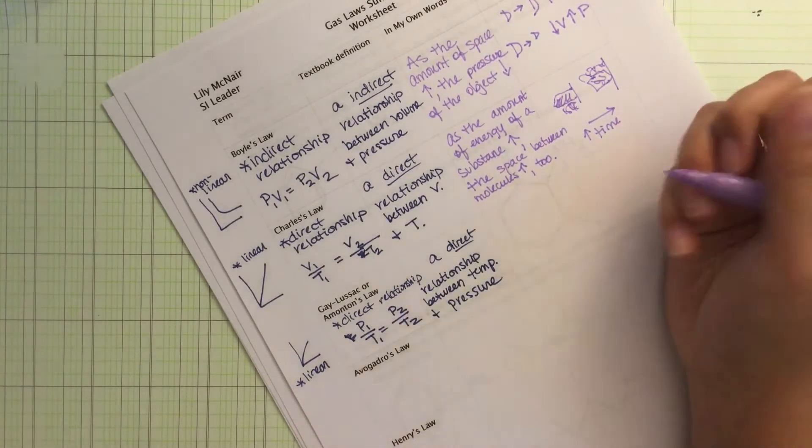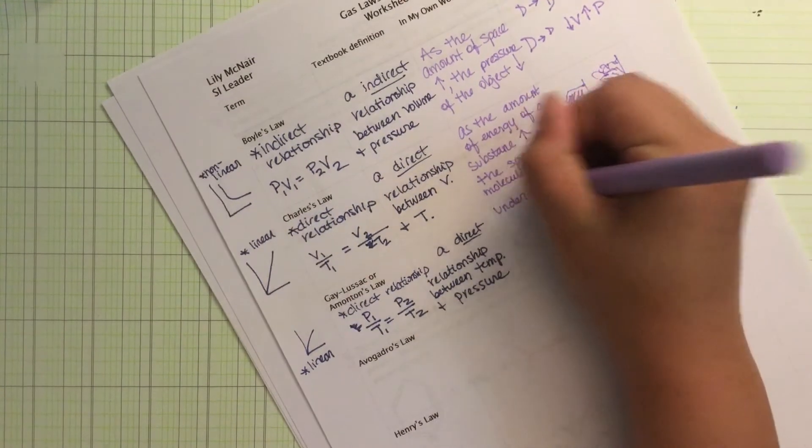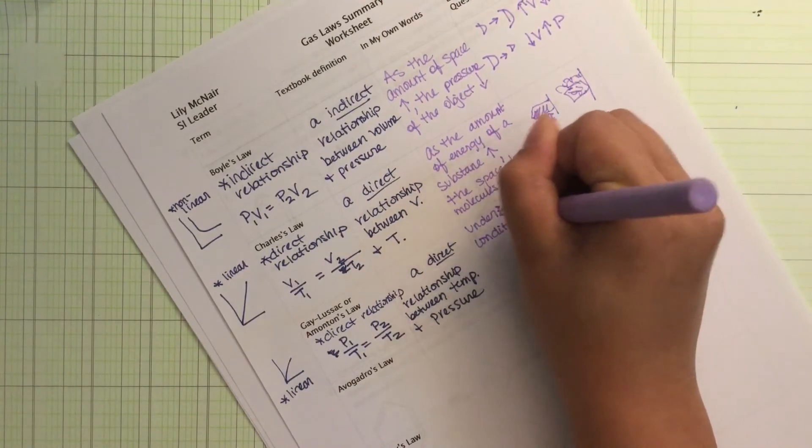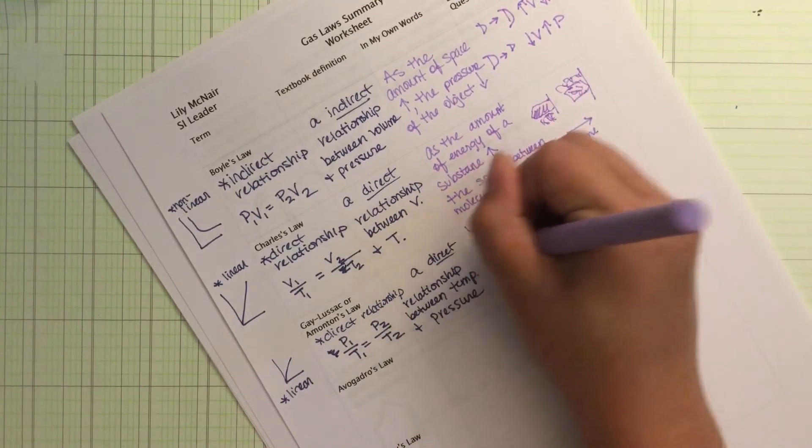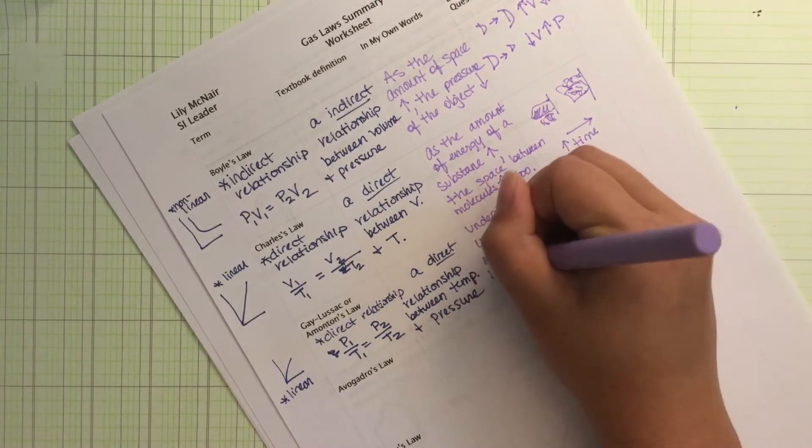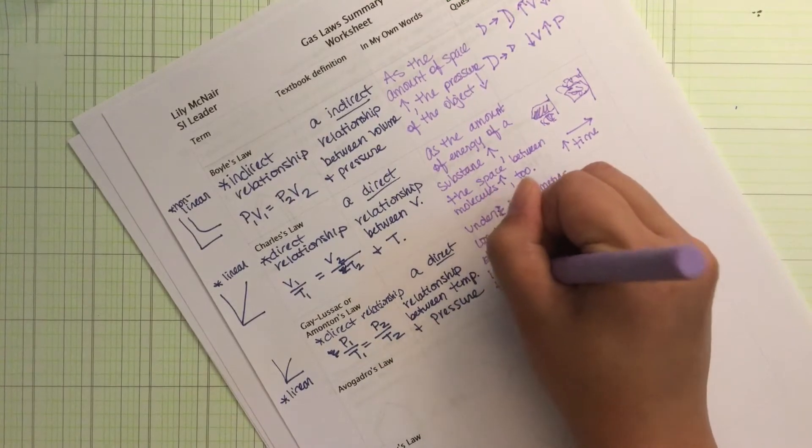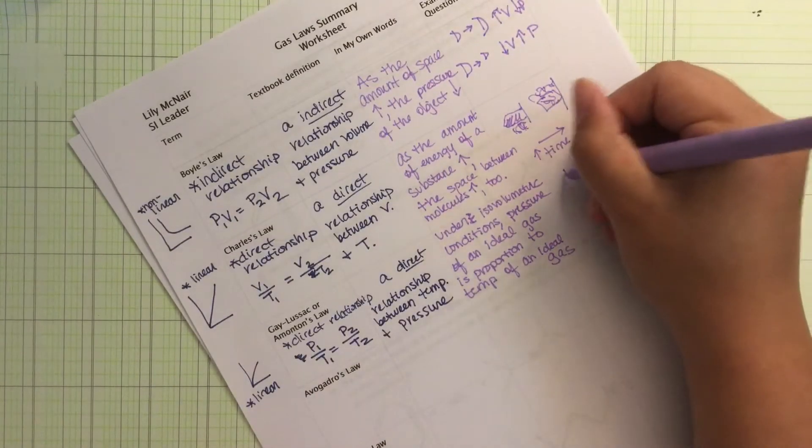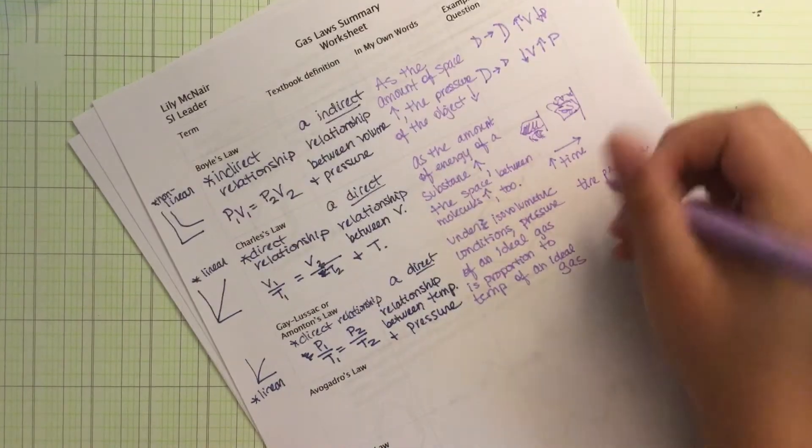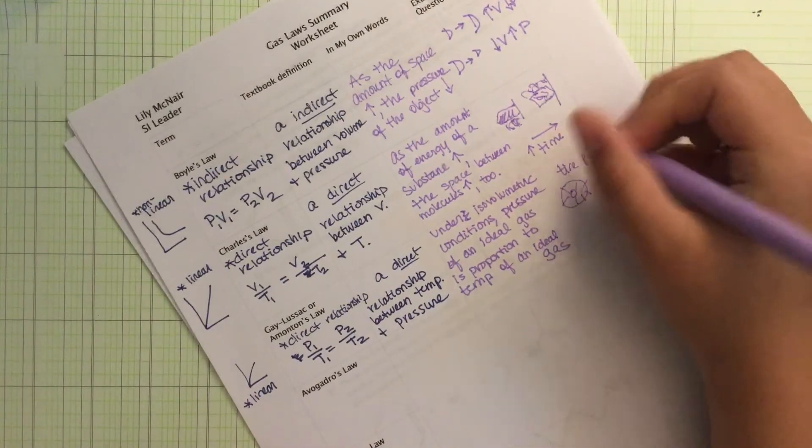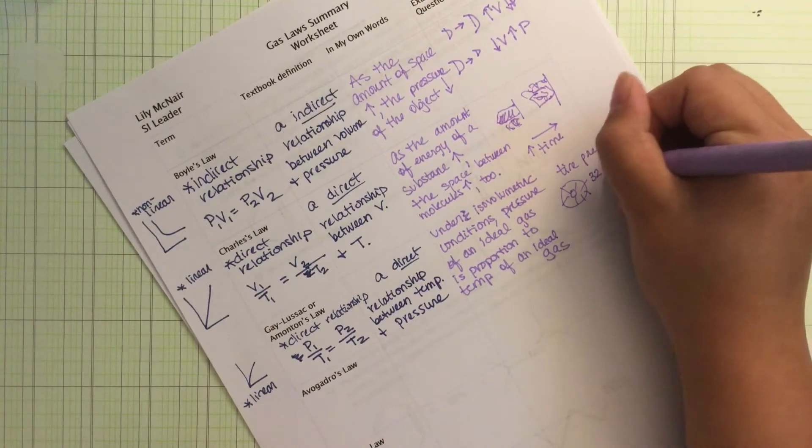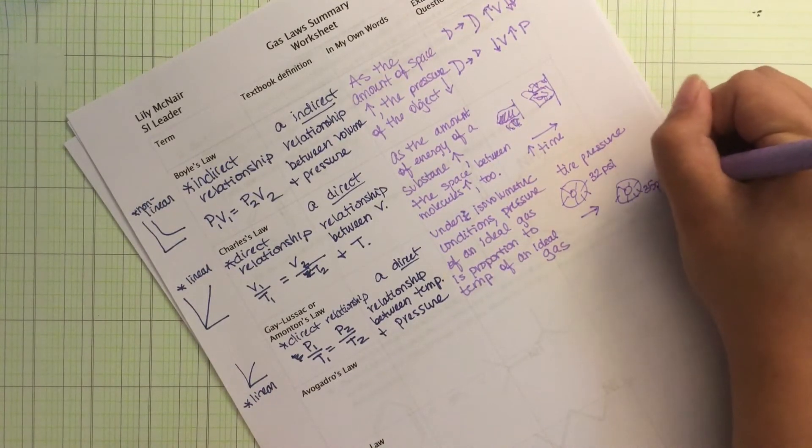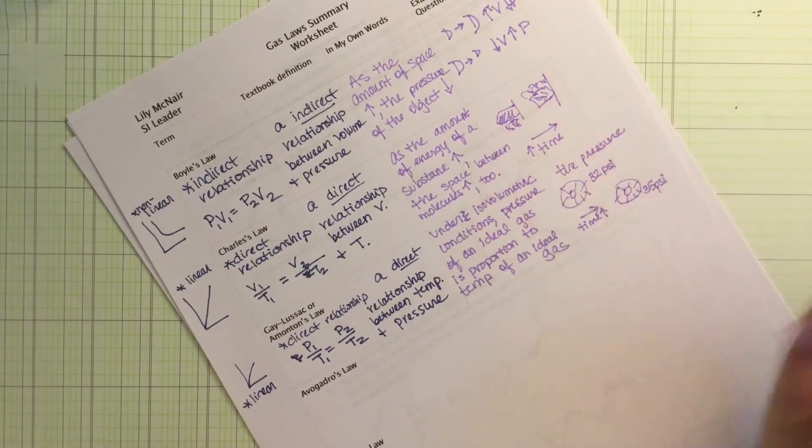I would probably say under isovolumetric, that means same volume throughout conditions, pressure of an ideal gas is proportional to temperature of an ideal gas. I like to think about tire pressure when I try to think of an image. So as you heat up in a tire, it might start off at 32 psi, pounds per square inch. But as you heat that up, that pressure in the tire can increase to 35 psi. Not a huge increase, but definitely increase in pressure as time goes by. And we increase the temperature of the tire through friction.